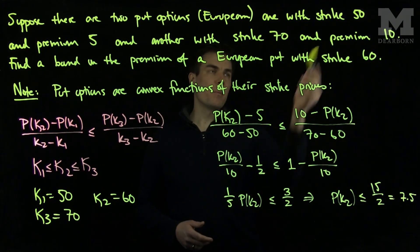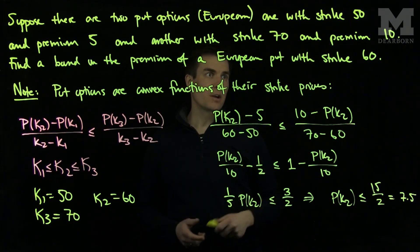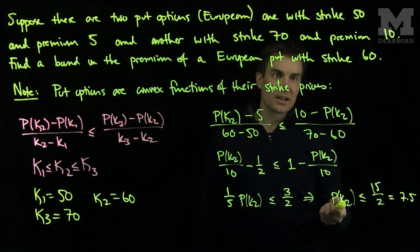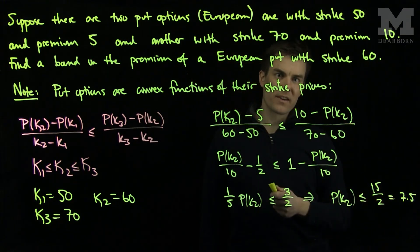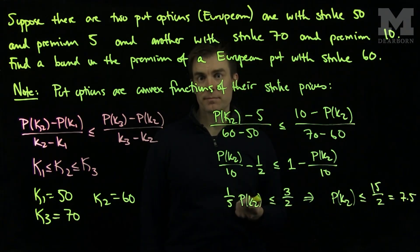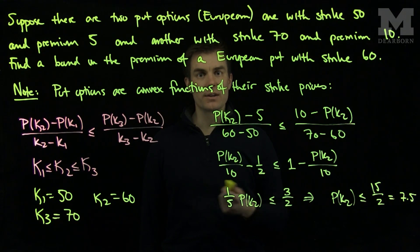So we see that if the premium of a fifty strike put is five, and the premium of a seventy strike put is ten, then the premium on a sixty strike put can be no more than seven point five, otherwise there will be an example of an arbitrage situation which occurs. So we see that when we are trying to find estimates for put premiums, we can always use convexity to get an estimate if there are three distinct strike prices.